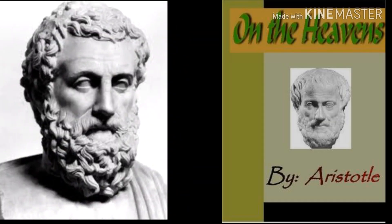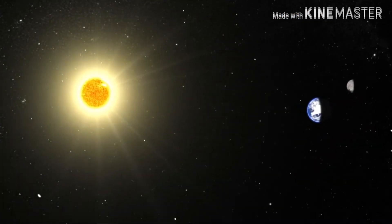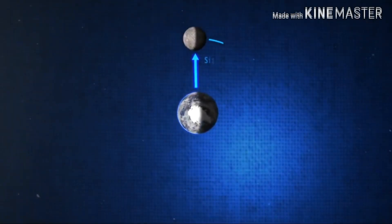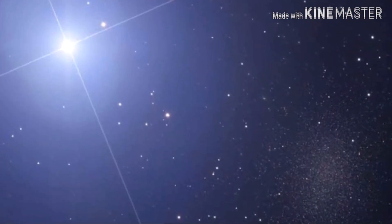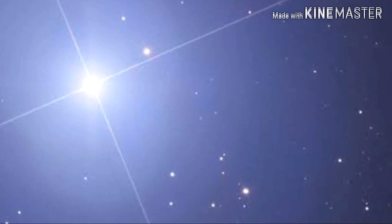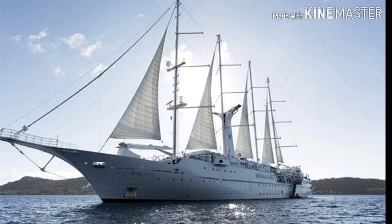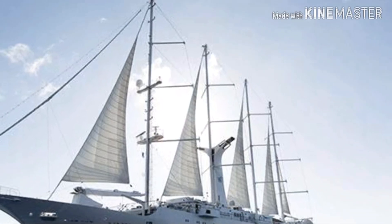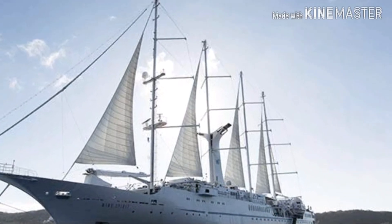Aristotle, in his book 'On the Heavens,' gave two arguments which prove Earth is spherical, not a flat round plate. His first argument was on the lunar eclipse — the shadow of Earth on the Moon is always round, not elongated and elliptical. Second, on the position of the North Star, which appears differently in the north and south. One more argument was about ships — we see the sail of a ship first and then the hull coming from the horizon. All this is possible only if Earth is a sphere.